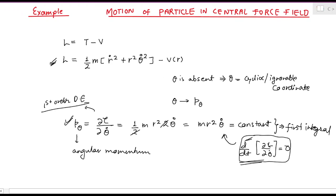I hope this example made it clear how we obtain our generalized momentum, what is our cyclic coordinate, and what happens when any coordinate is absent in the expression for the Lagrangian—the corresponding momentum to that coordinate becomes a constant of motion. That's all for today, thank you very much.